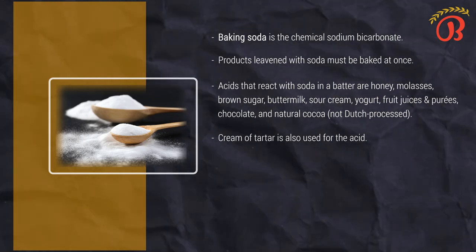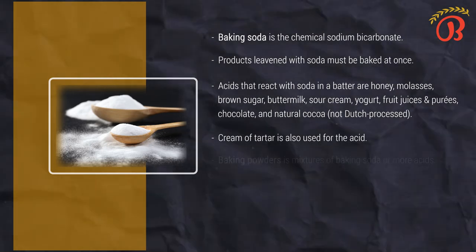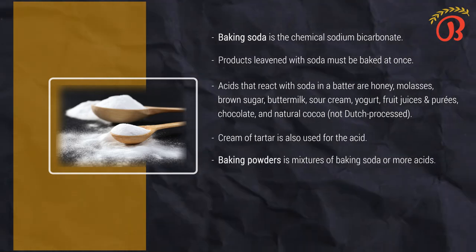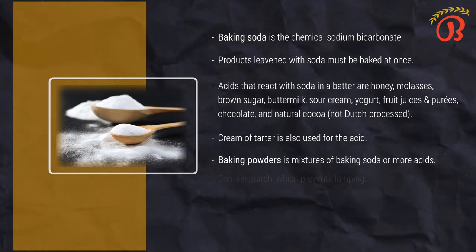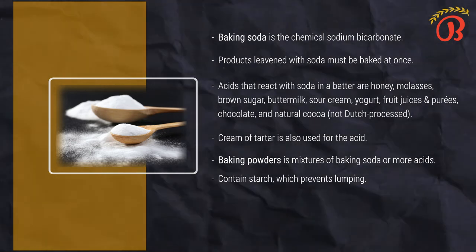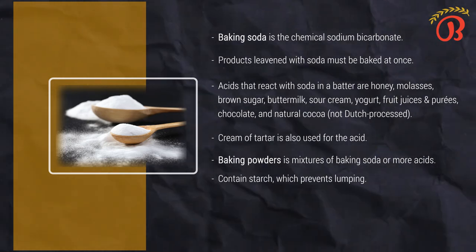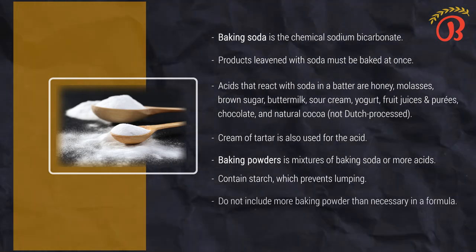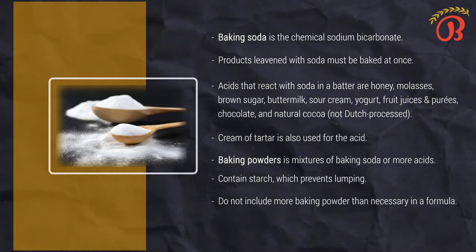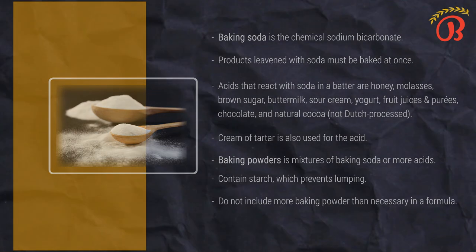If more leavening power is needed, baking powder — not more soda — is used. Baking powder is a mixture of baking soda plus one or more acids to react with it. It also contains starch, which prevents lumping and brings the leavening power down to a standard level. Because baking powder does not depend on acidic ingredients in the formula for its leavening power, it is more versatile. Do not include more baking powder than necessary in a formula because undesirable flavors may be produced. Also, excess leavening may create an undesirably light, crumbly texture.